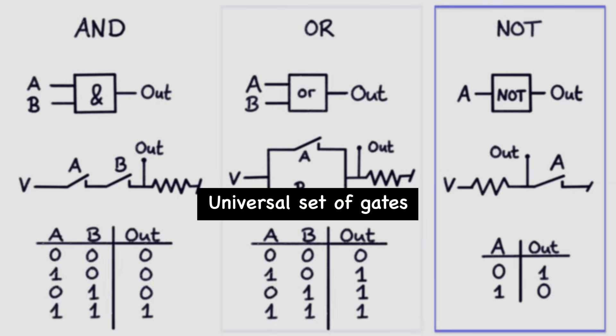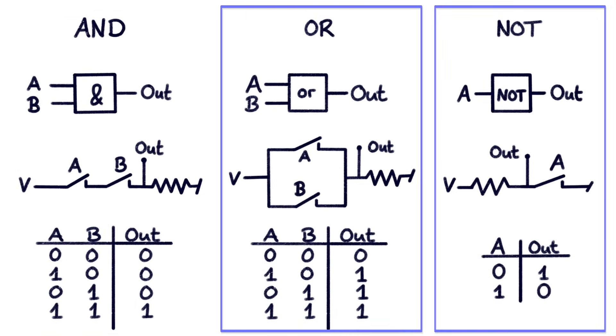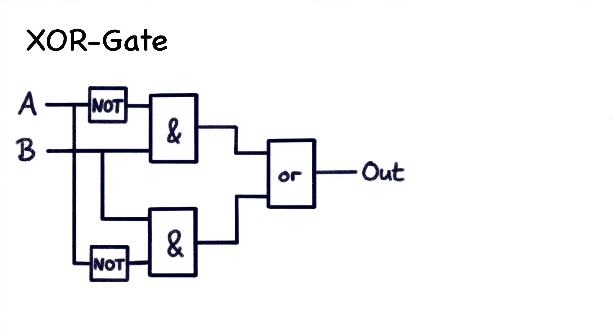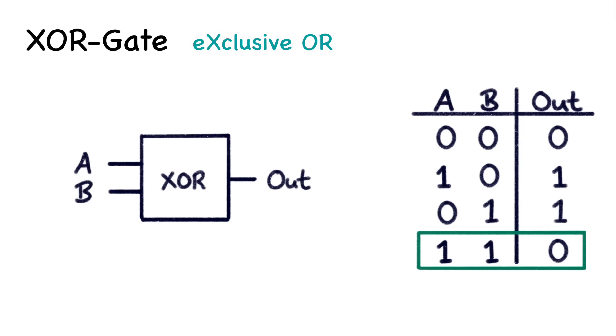In fact just the NOT gate and one of the others are already sufficient. Yet to construct a unit that can add together two numbers it is convenient to introduce another gate which can be constructed with the three gates from before as shown here. This gate is referred to as XOR, where the X stands for exclusive. Looking at its truth table we see that it outputs a 1 only when either A or B are 1 but not when both of them are 1, as was the case for the OR gate.